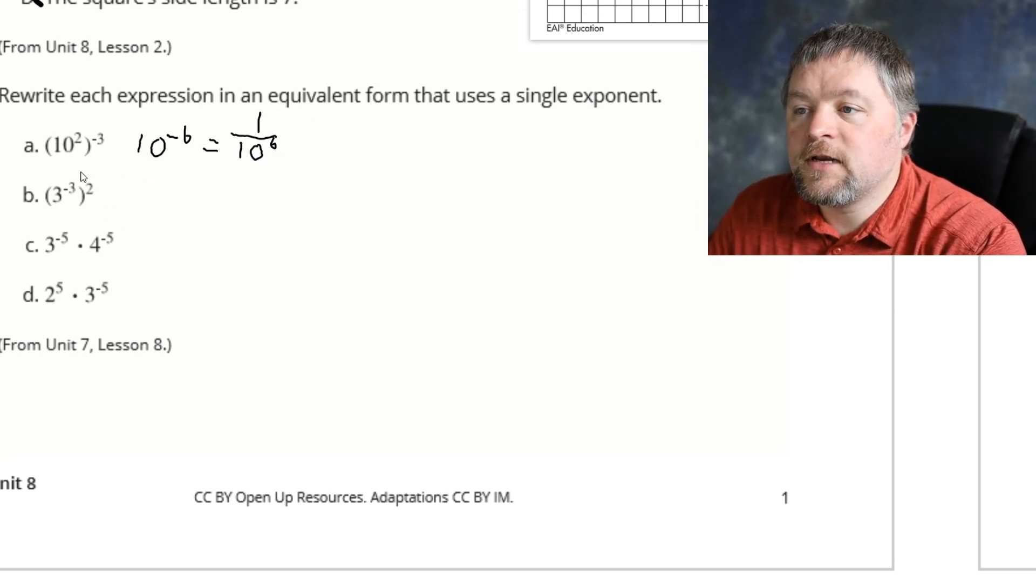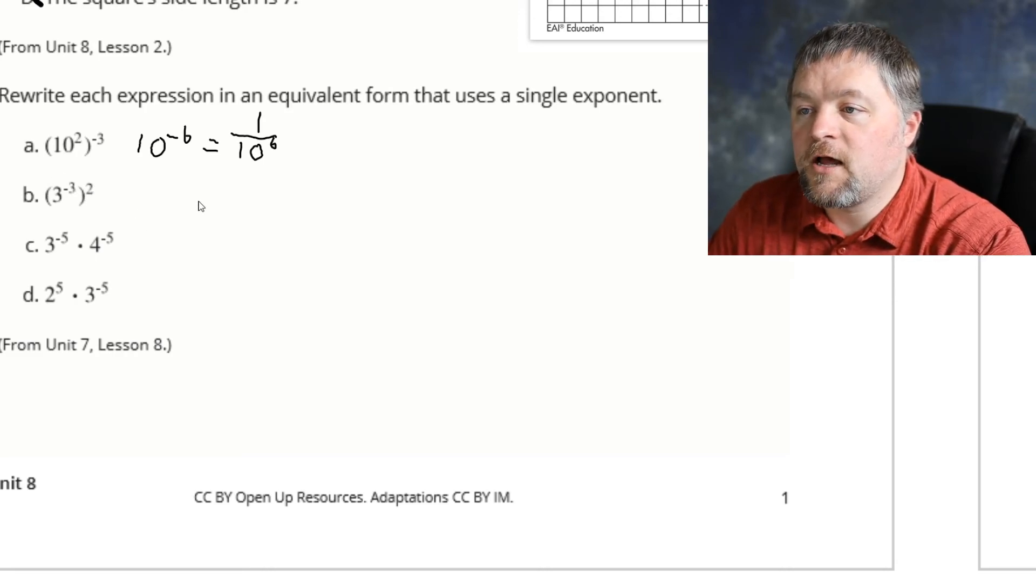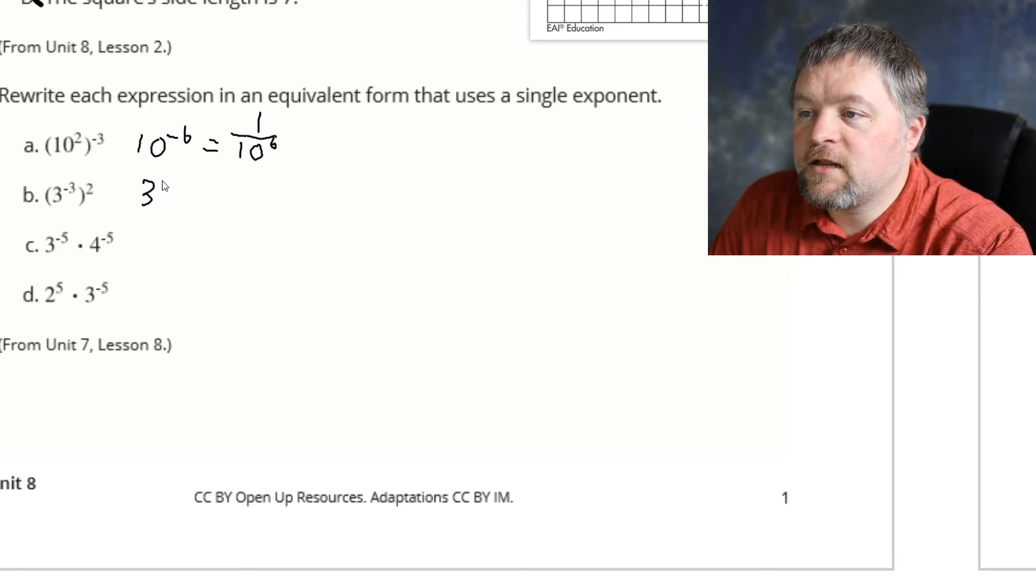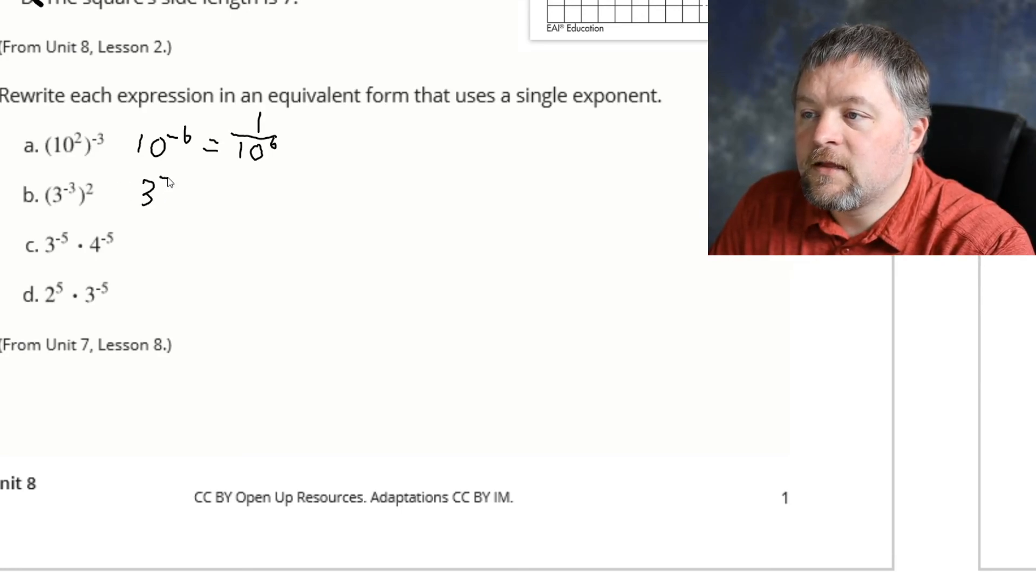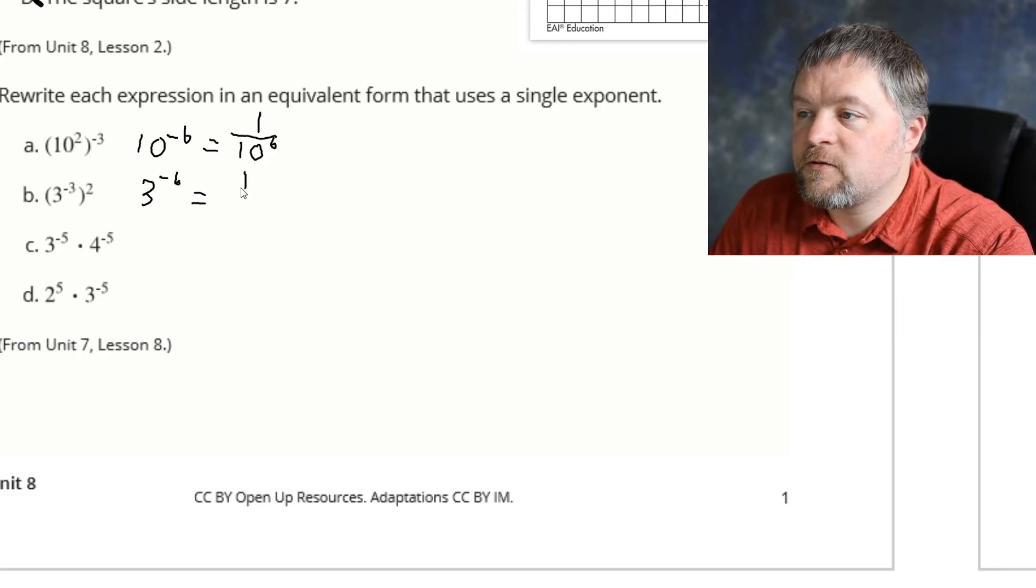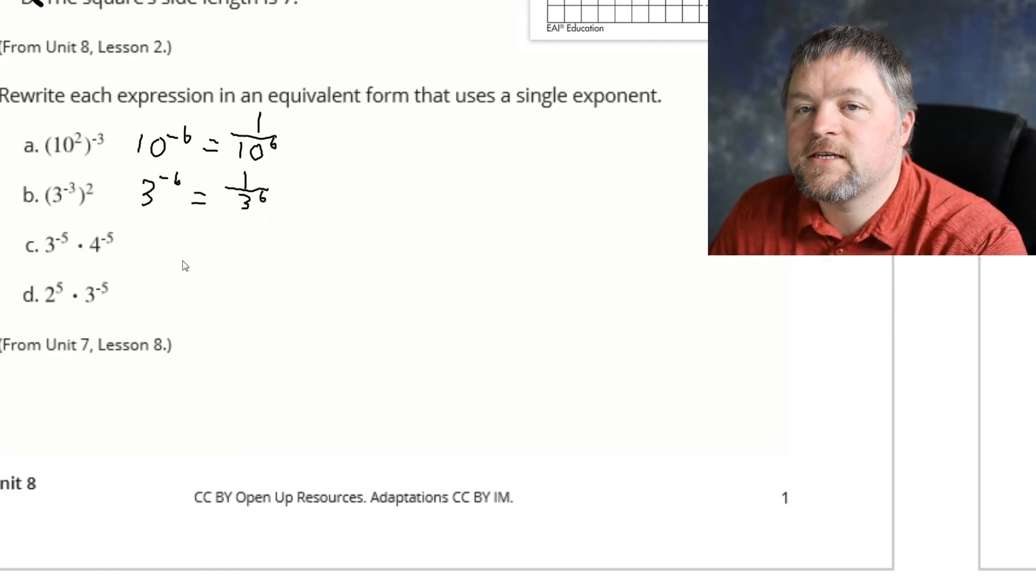Our next one, again, raised to a power, multiply the exponents. That is equal to 3 to the power of negative 6. Negative 3 times 2, negative 6. You could also get rid of that negative exponent by writing this as 1 over 3 to the power of 6.